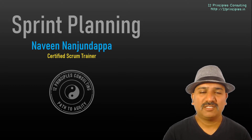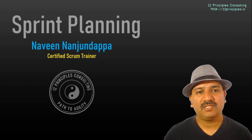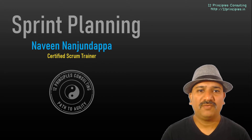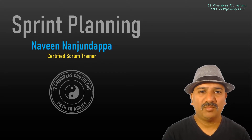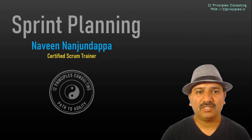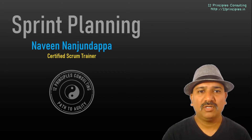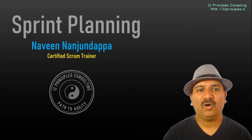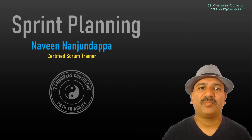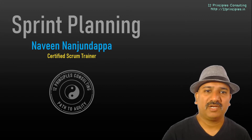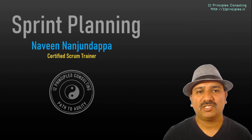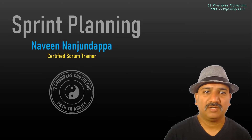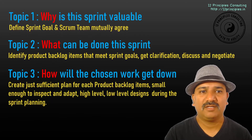Sprint Planning is the first event in the Sprint. During this event, the team members get together to talk about the Sprint Goal, the Sprint Backlog, and how they are going to collaborate and self-organize towards achieving these goals and objectives. Let's look at it in detail.